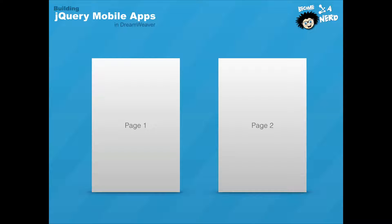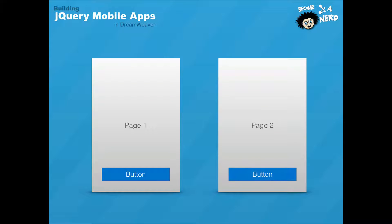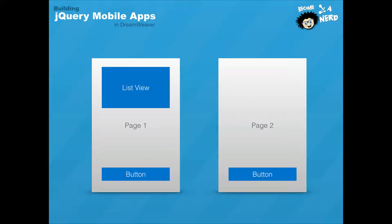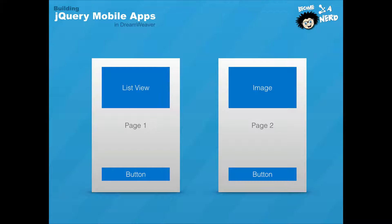You can have separate items within each page. For example, a button on page 1 and a completely different button on page 2, as well as a list view on page 1 that links to different pages in the HTML file, and an image on page 2 that is not contained within page 1. You just need to make sure that content is wrapped inside the div tag of its page.